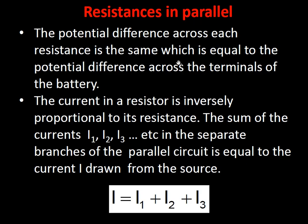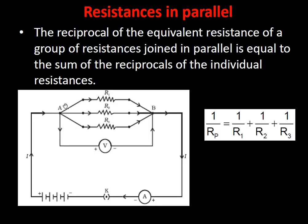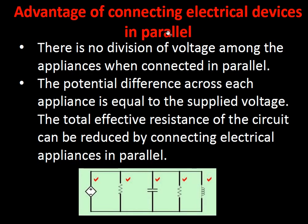In a parallel connection, voltage remains the same across all branches — the reverse of series. The current through each resistor is inversely proportional to its resistance. The total current I = I₁ + I₂ + I₃. The reciprocal of the equivalent resistance Rₚ is: 1/Rₚ = 1/R₁ + 1/R₂ + 1/R₃. In the diagram, R₁, R₂, R₃ are in separate parallel branches, with the ammeter connected in series with the source.